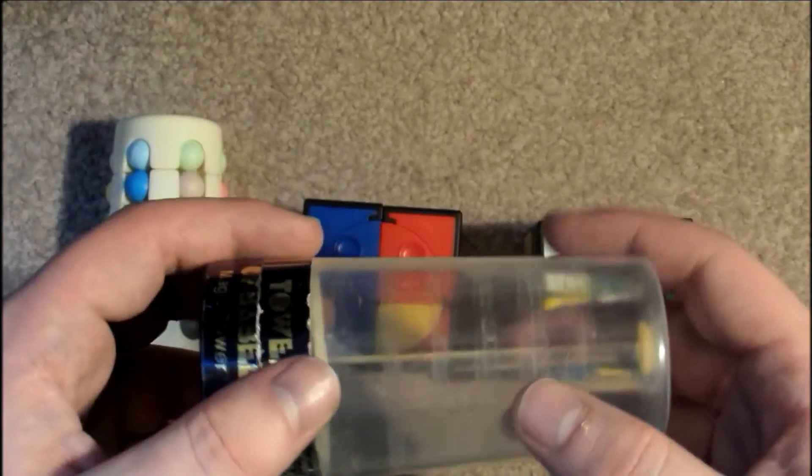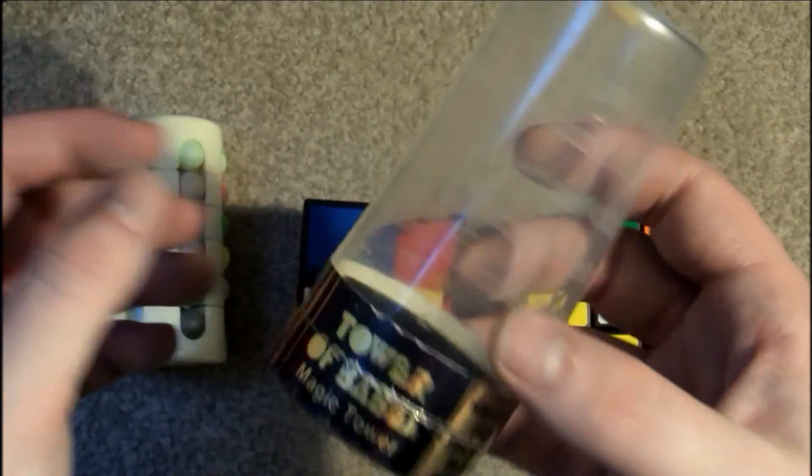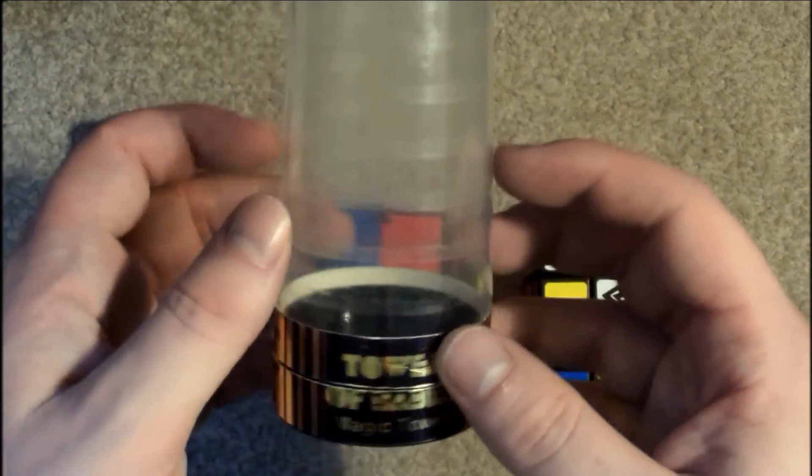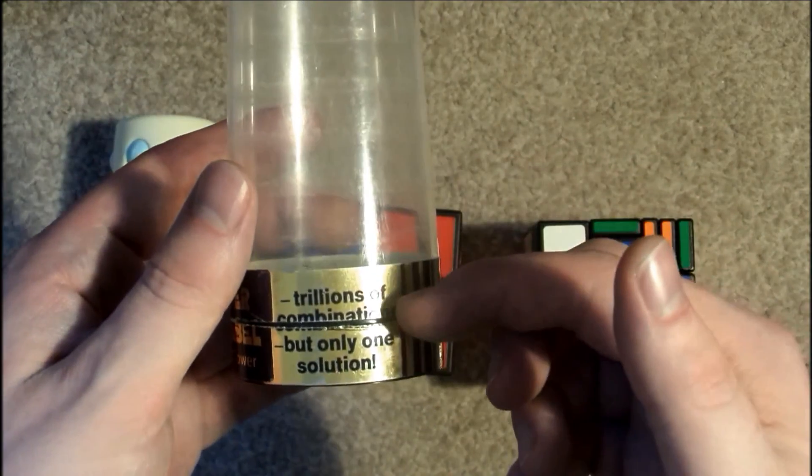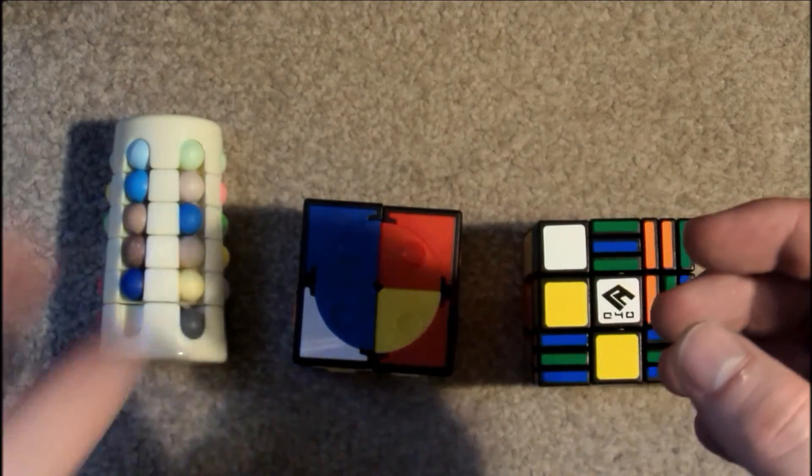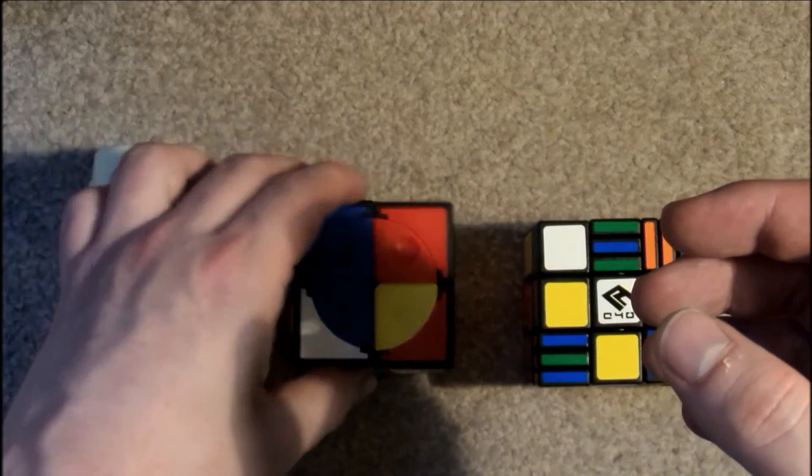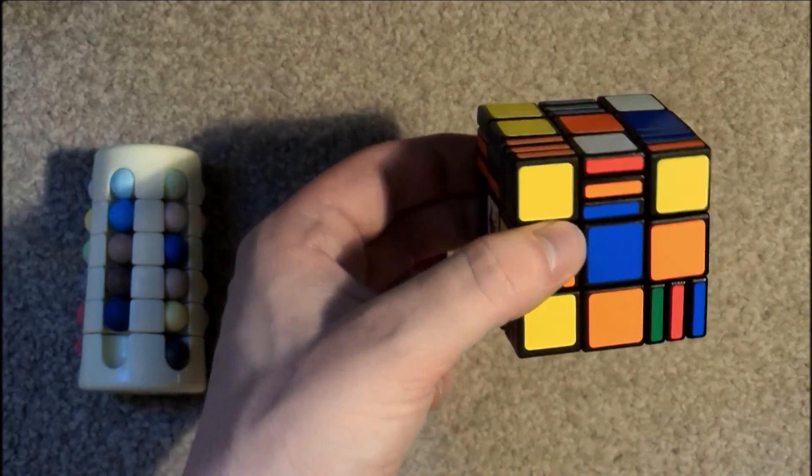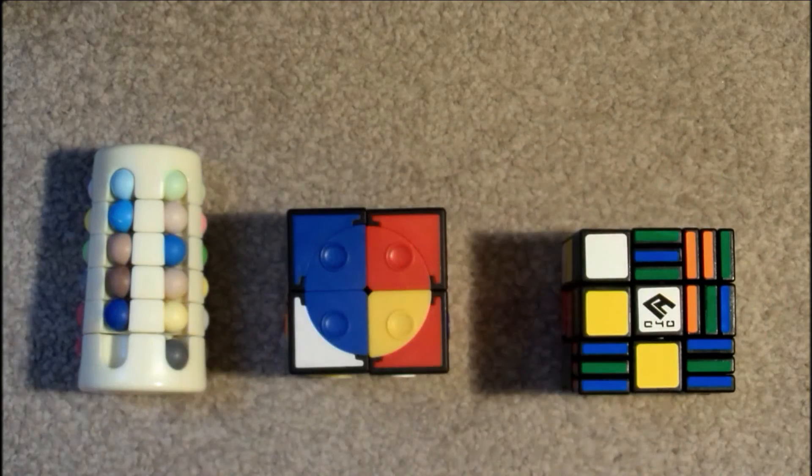Okay sorry about that but the camera stopped recording, it only records for 20 minutes and then it stops. So yeah I forgot to show the packaging for the Tower of Babel. There it says warning if you pick it up you'll never be able to put it down. Let's hope that's true. And there it says trillions of combinations but only one solution. So yeah we have the Tower of Babel, the Shengshou Crazy 2x2 and the Cube4You 3x3x7. Thanks for watching.